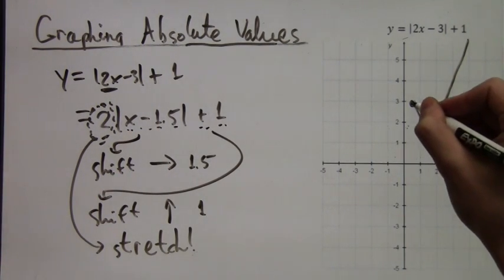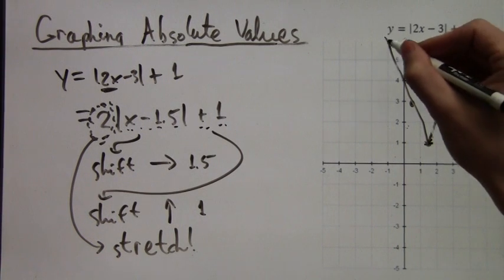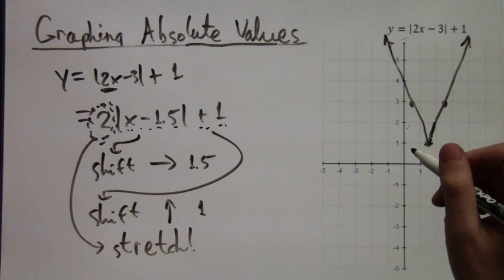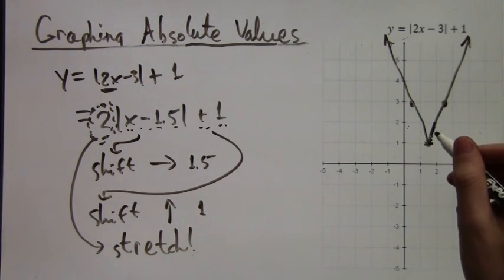And then those two points, that's the other side. And that is our graph. Our graph of y equals |2x minus 3| plus 1. That's really all it takes. Well, thank you for watching this video lesson. I hope you found it helpful.